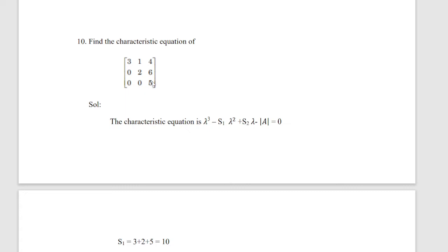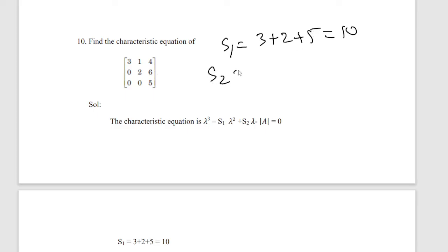For the 3x3 characteristic equation, S1 is the sum of diagonal numbers: 3 + 2 + 5 = 10. S2 is the sum of the diagonal minors — for each diagonal element, delete its row and column and find the 2x2 determinant.